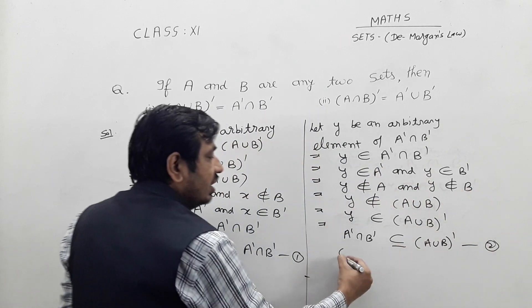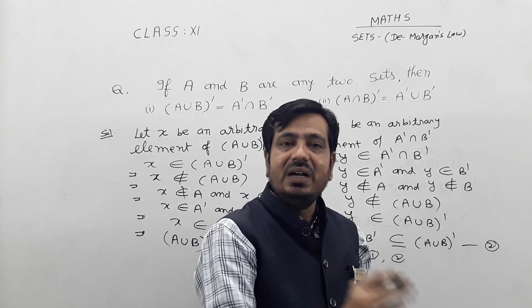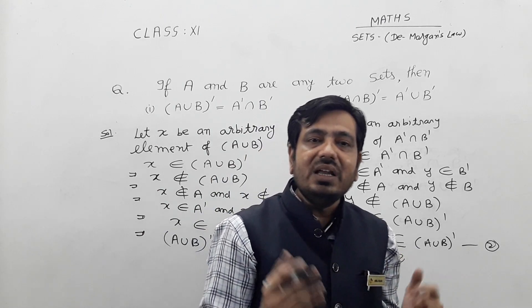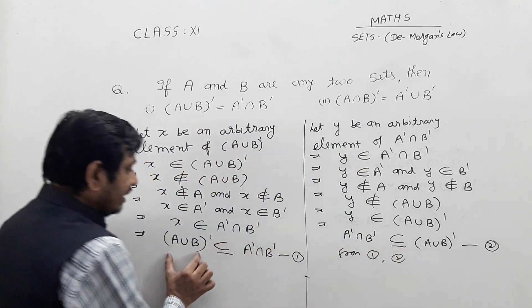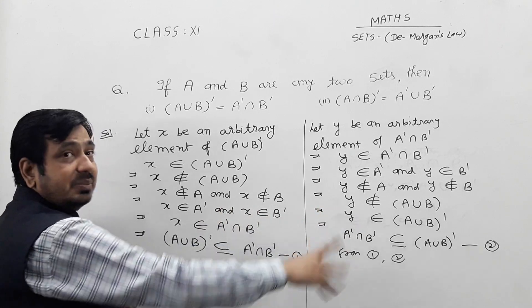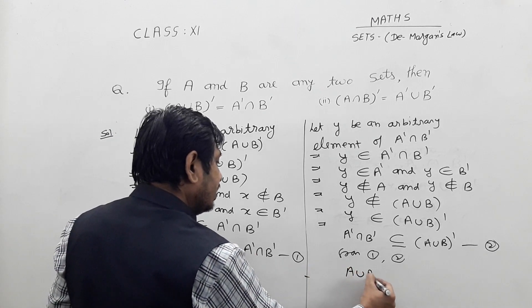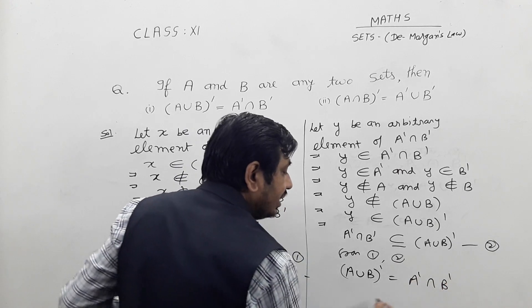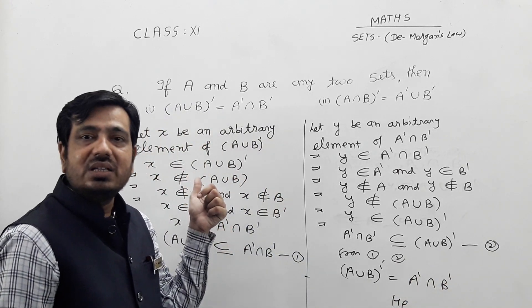From the first and second equations, since A union B whole dash is a subset of A dash intersection B dash, and A dash intersection B dash is a subset of A union B whole dash, both sets are subsets of each other. You know that if A is a subset of B and B is a subset of A, then A and B are equal sets. This implies A union B whole dash is equal to A dash intersection B dash. This is the proof of the first De Morgan's law.